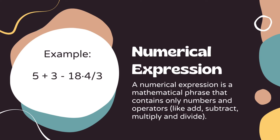A numerical expression is just a mathematical phrase that contains only numbers and operators like add, subtract, multiply, and divide. An example is five plus three minus eighteen times four divided by three. And don't forget — expressions don't have equal signs. If we had an equal sign, we would call it an equation.